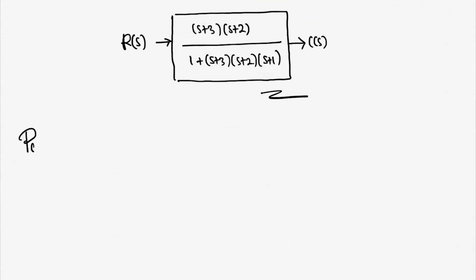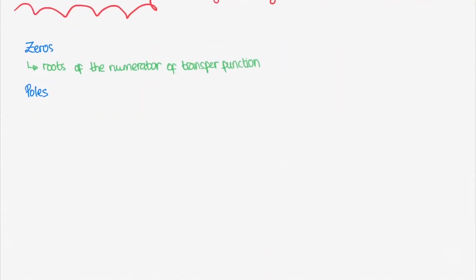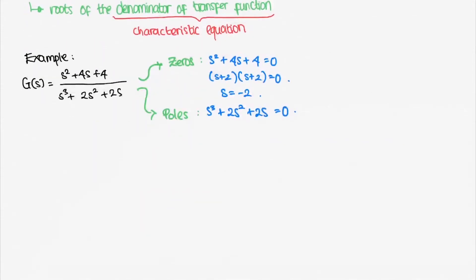One last thing to know before analyzing the stability of the systems are poles and zeros. As you might have known from the signal and systems class, zeros are simply the roots of the numerator of our transfer function, while poles are simply the roots of the denominator. The denominator part of our transfer function is usually called the characteristic equation. As an example, say we are given a function s² + 4s + 4 over s³ + 2s² + 2s. To get the zeros of the system, we factor out the numerator and we got -2 as its roots.